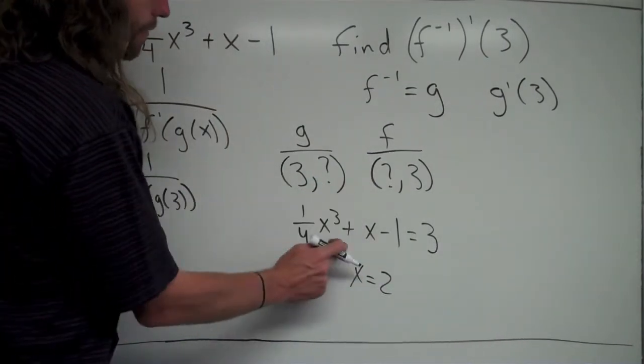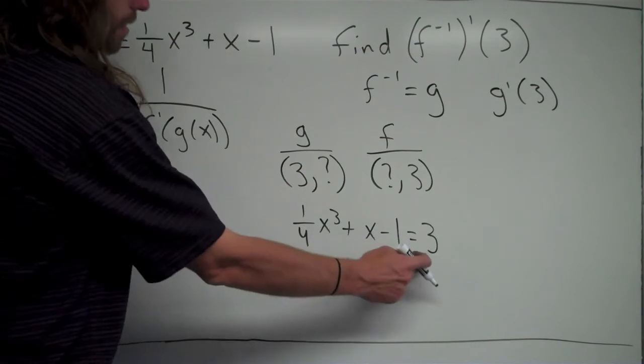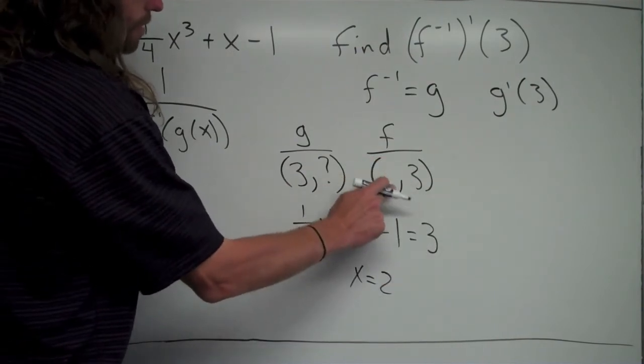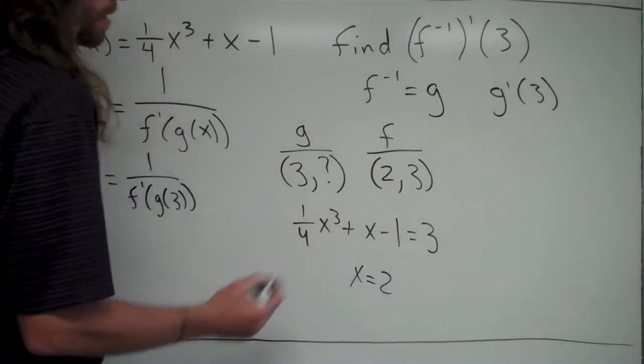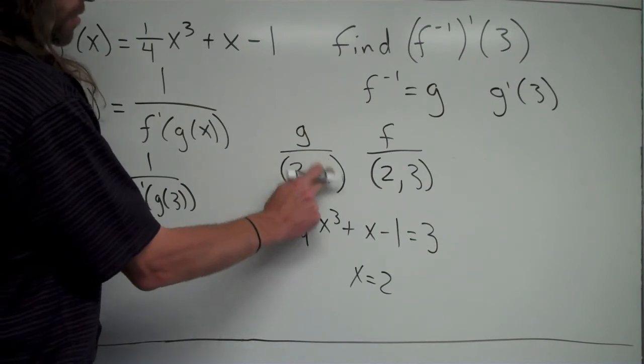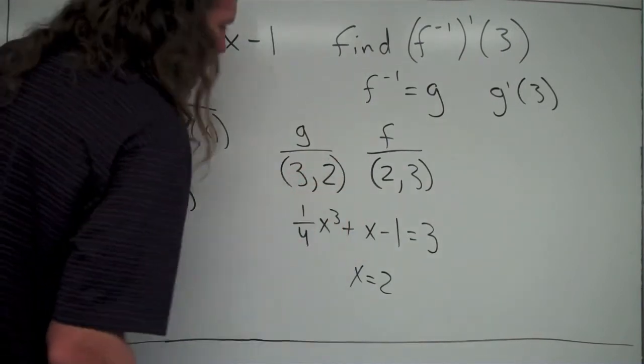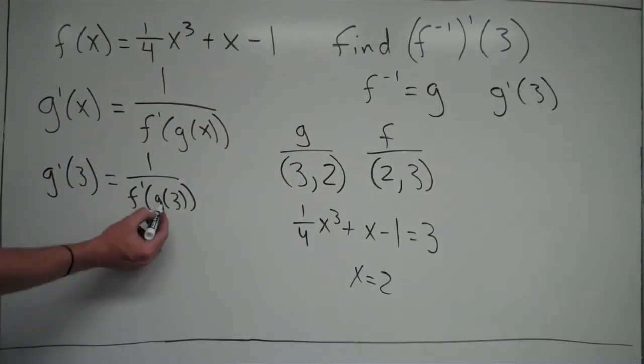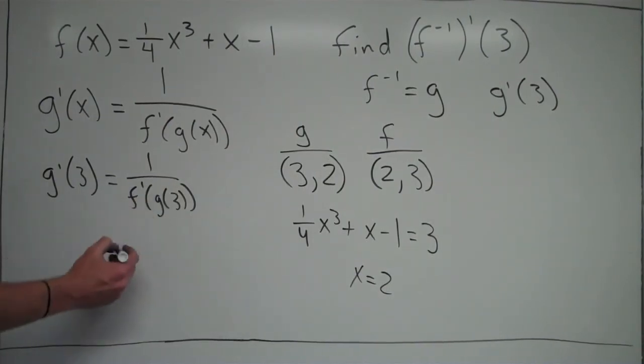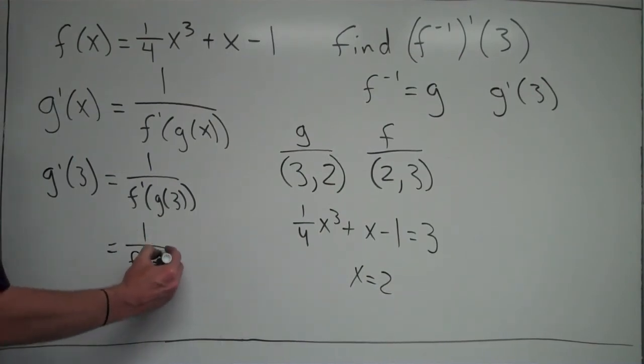So what we have found out is that on the graph of f, if you plug 2 in, it ends up equaling 3. So this question mark here is equal to 2, therefore this question mark also is equal to 2. So what we've just discovered is that g of 3 is equal to 2. Without even knowing the function for g of x, we found out that g of 3 is 2. So now we have 1 over f prime of 2.